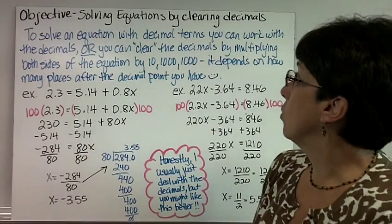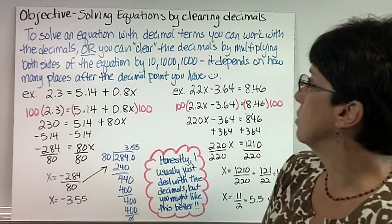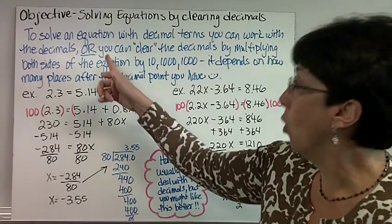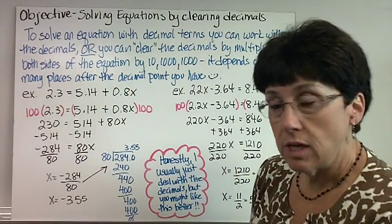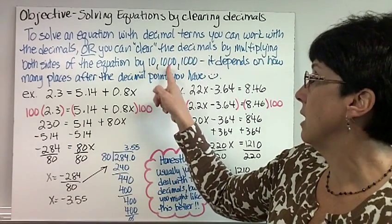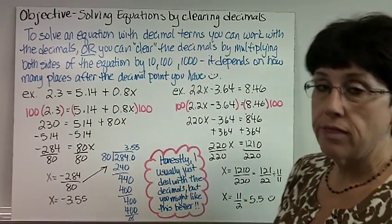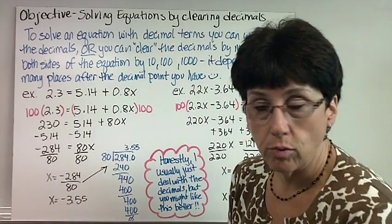Today's objective is solving equations by clearing the decimals. To solve an equation with decimal terms, you can just work it out with the decimals, or you can clear the decimals by multiplying both sides of the equation by 10, 100, or 1,000. It depends on how many places after the decimal point you have in your problem.